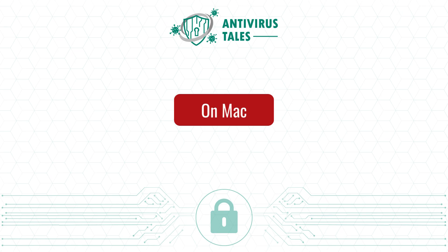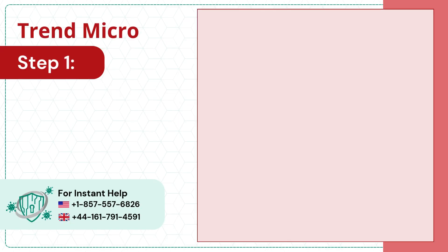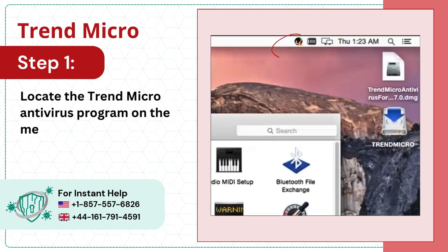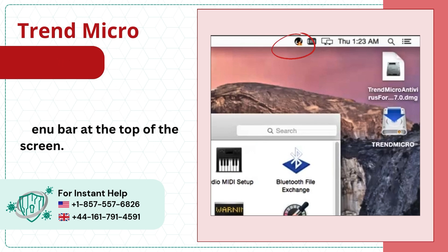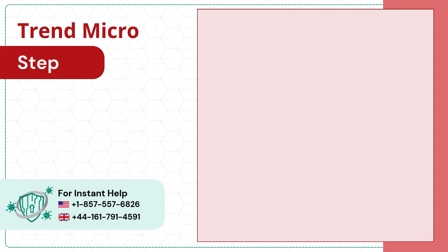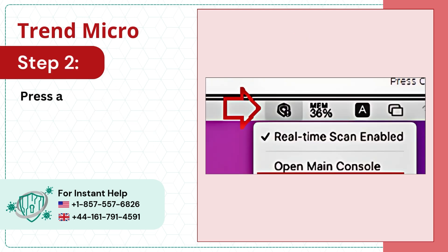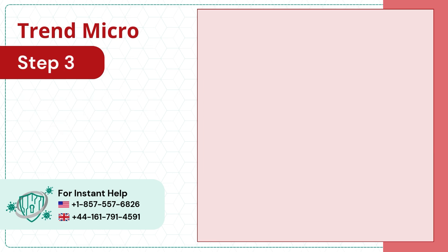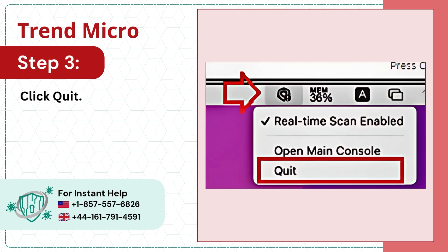On Mac. Step 1: locate the Trend Micro antivirus program on the menu bar at the top of the screen. Step 2: press and hold the control key while you click the Trend Micro icon. Step 3: click quit.